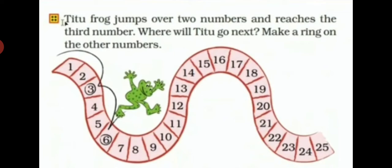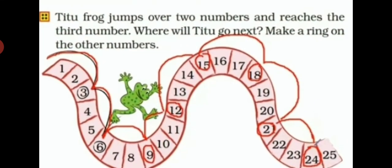You have to make the rings. This you have to do in your book itself. It is on page number 36. Open your book, you can check and you can do it. You have to cross two numbers and on the third number you have to make the ring. This exercise, this question, you have to do in your book.